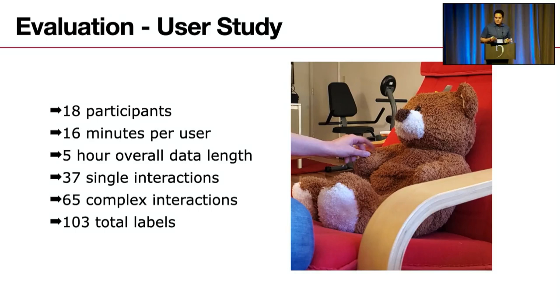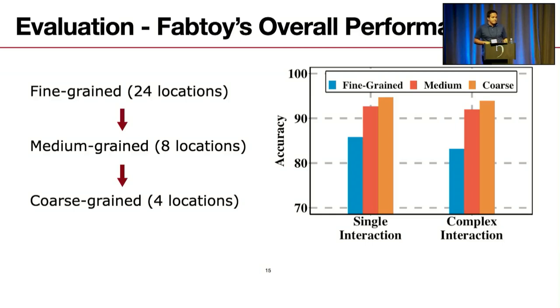Now let's see the evaluations and how Fabtoy performs. The first evaluation I want to share with you guys is the overall performance and the effect of reducing the spatial granularity on the accuracy. At the base case with the most spatial resolution, we have 24 sensors, as a result 24 locations, and the accuracy is around 83 percent for complex interaction and 86 percent for single interactions. But as we reduce the spatial granularity to eight locations by merging the adjacent sensors and down to four locations, accuracy is going to of course improve up to 93 and 94 percent.